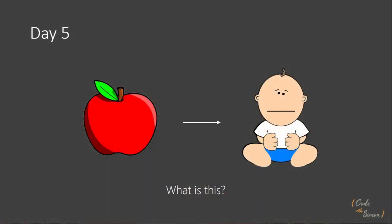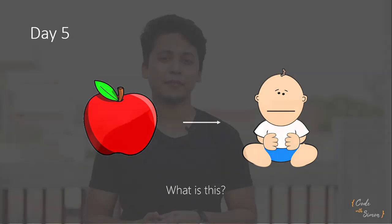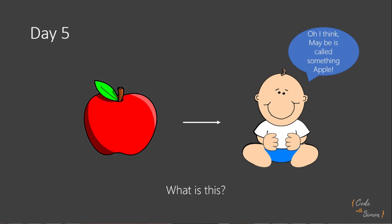Now day five is a tough time for the three year old kid. Because this time, the father shows him an apple but he does not tell him that this is called an apple. Rather, he asks him, what is this? The kid then may reply that this is an apple.